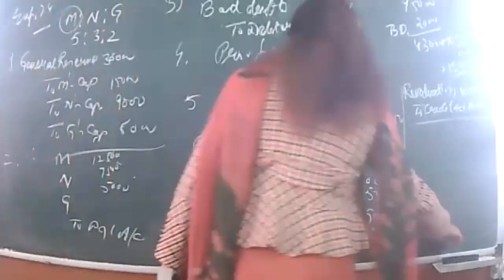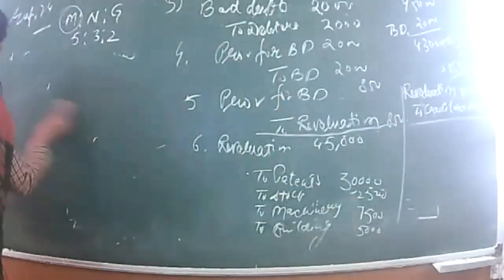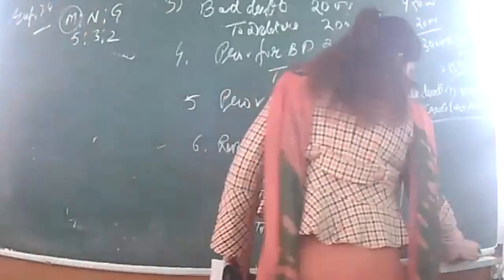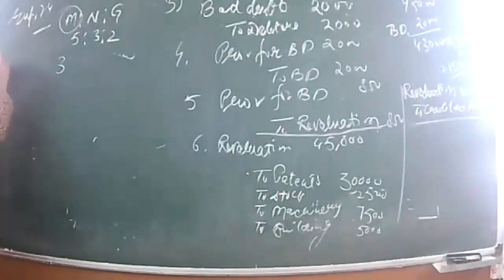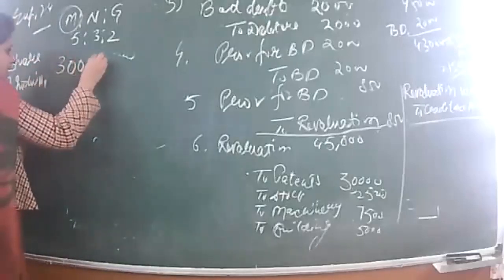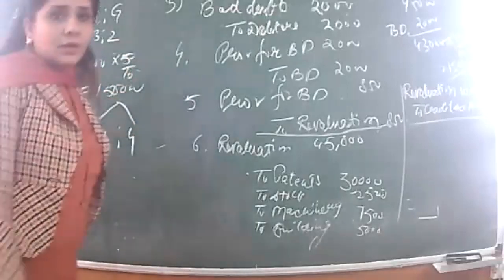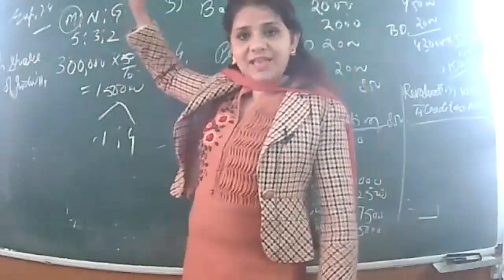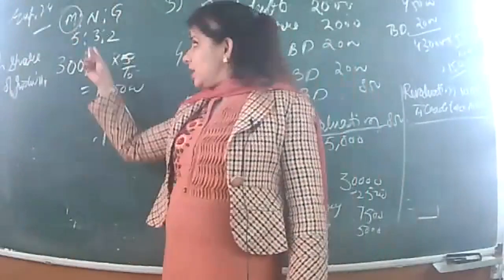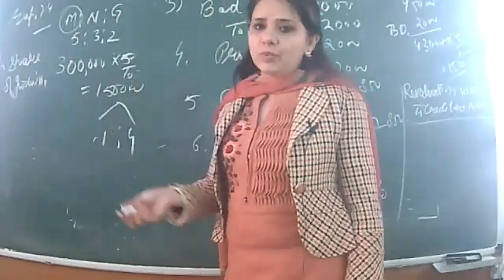For goodwill treatment, this is the firm's goodwill. I have to take out M's share of goodwill. Firm's goodwill is 3 lakhs; M's share = 3 lakhs × 5/10 = 1 lakh 50,000. Gaining ratio is 1:4. N's share to compensate = 1/5 × 1,50,000 = 30,000; G's share = 4/5 × 1,50,000 = 1,20,000. N's capital debited, G's capital debited to M's capital.